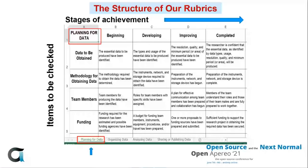Here's our first rubric — the planning for data rubric. It has stages of achievement across the top: beginning skills, developing skills, improving skills, and completed skills. When a new researcher finishes a row of the rubric, they can be said to have completed that aspect of data management. The horizontal rows describe dimensions: data to be obtained, methodology for obtaining data, team members, and funding.